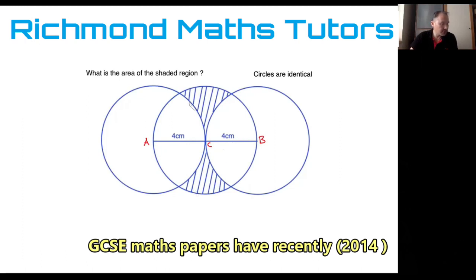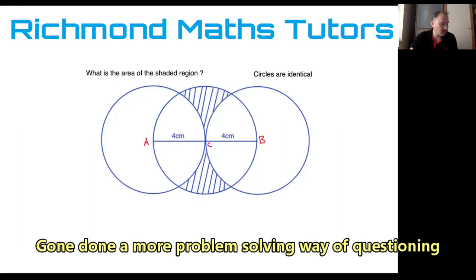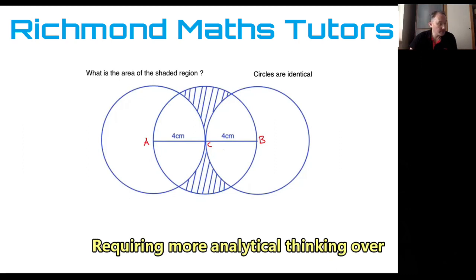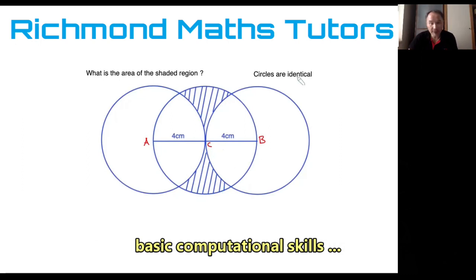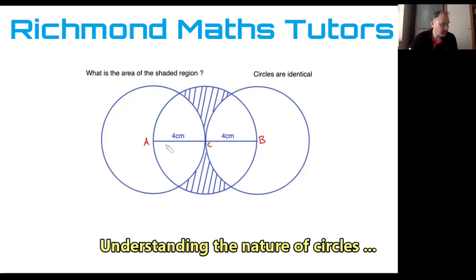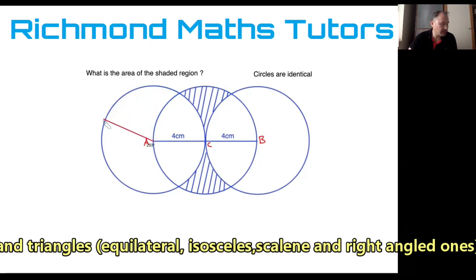We're asked to work out the shaded region in between. What makes this question quite awkward is that it requires you to understand and use several concepts all in one question. So before we try to figure out the area of the shaded region, we have to draw in a few lines to help find out what's actually going on. The great thing about circles is that the distance from the center to every single point on the circle is always the same.